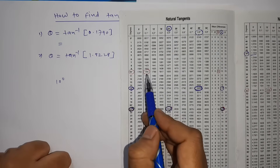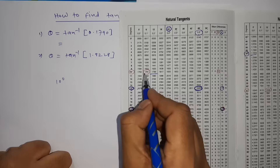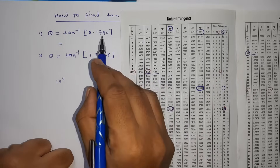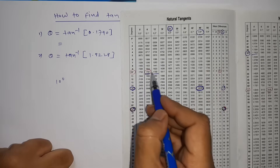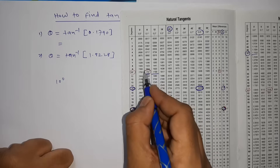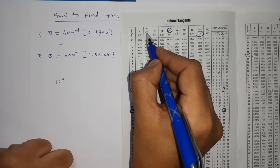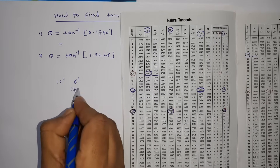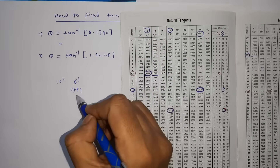In 10 degrees, try to reach the nearest value to 1790. So 1763, next is 1781, next is 1799. Between 1781 and 1799, the nearest value smaller than 1790 is 1781. I got 1781 at 6 minutes. So at 6 minutes I got 1781, but my value is 1790.